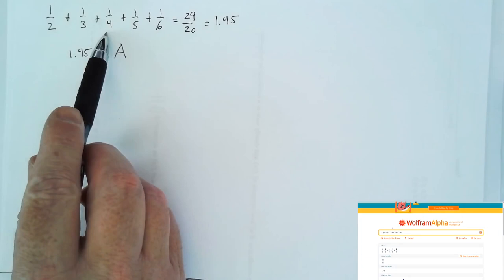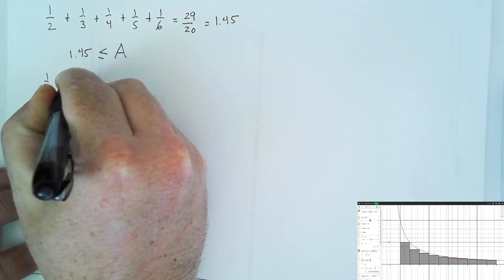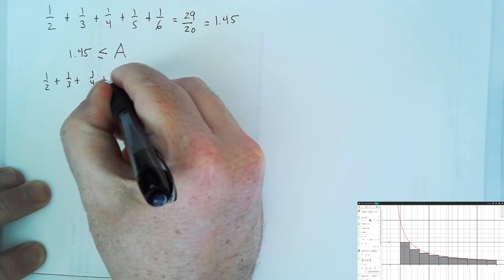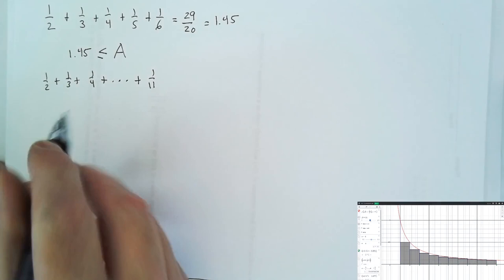Now, as long as we only have five rectangles, this is not a difficult arithmetic expression to write down. But if we change the number of rectangles, we might have to write 1 half plus 1 third plus 1 fourth all the way up to 1 eleventh. There might be a more compact way to write this.